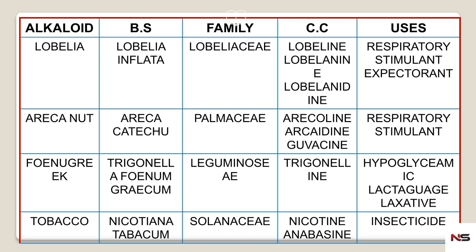For arachanate: the biological source is Areca catechu, which belongs to the family Palmaceae. The chemical constituents are arecoline and guvacine. It is used as a respiratory stimulant, similar to lobelia.